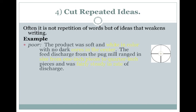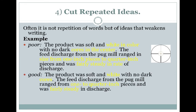Cut repeated ideas is a little more complex, because we're talking about the ideas that the words convey — the meanings. 'White in color' — obviously white is a color, so 'in color' is redundant. 'Cores in the center' — cores are the center, therefore we don't need to repeat 'the center.' There are repeated ideas buried within the actual writing itself, and if we cut them out it makes for a much cleaner sentence.